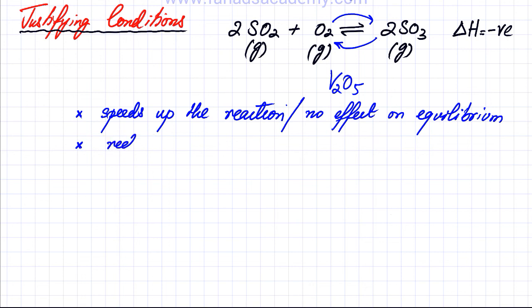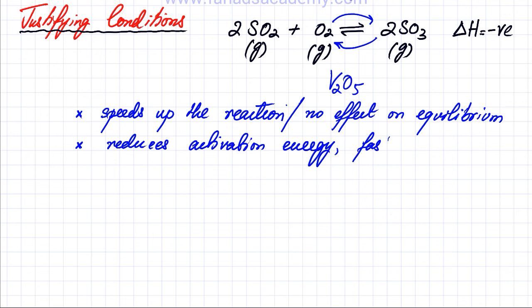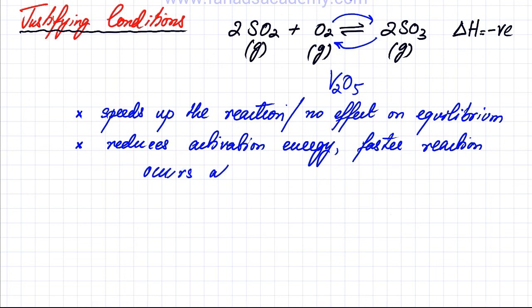The catalyst speeds up the reaction by reducing the activation energy, which means a faster reaction occurs at a lower temperature — so indirectly, your energy cost is also reduced. For example, if it would take four hours to attain equilibrium without a catalyst, adding one means that same equilibrium is attained within half an hour. Overall, your reaction is faster and your energy costs are reduced.